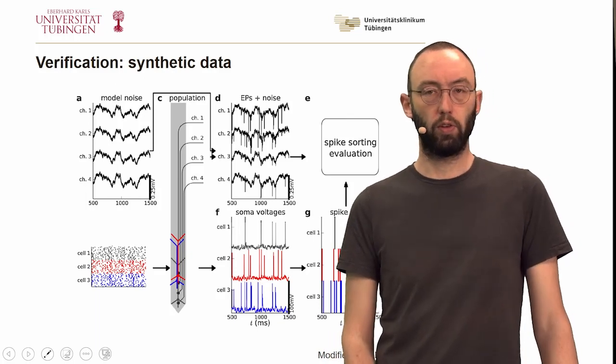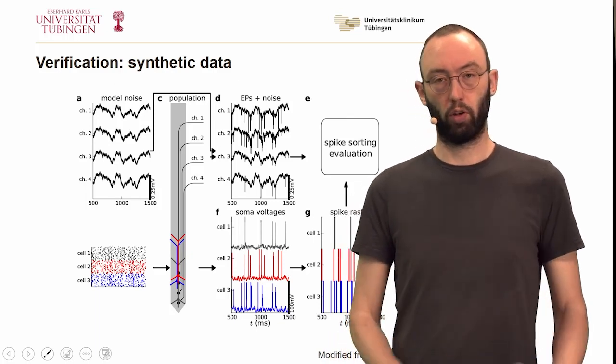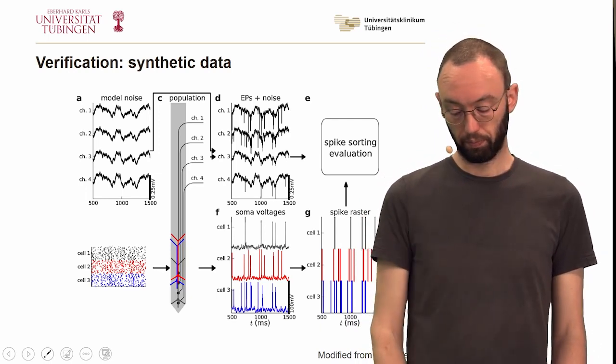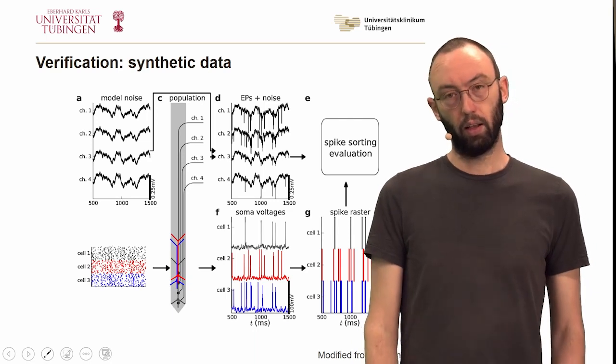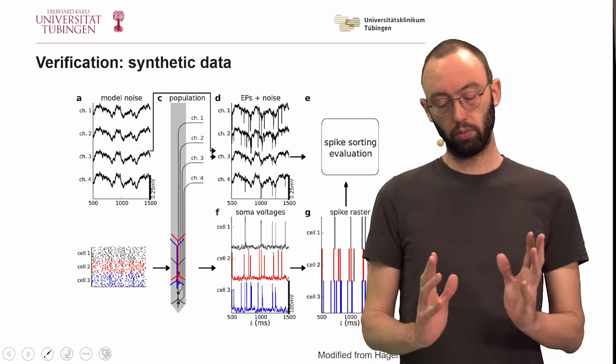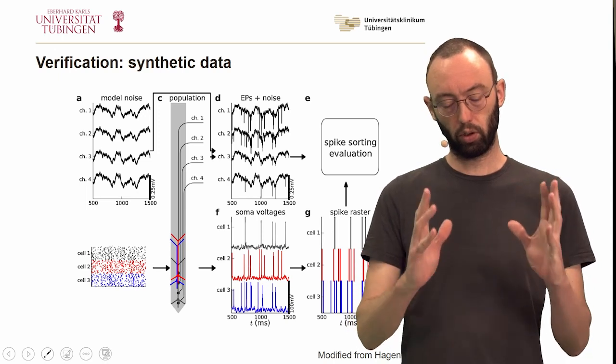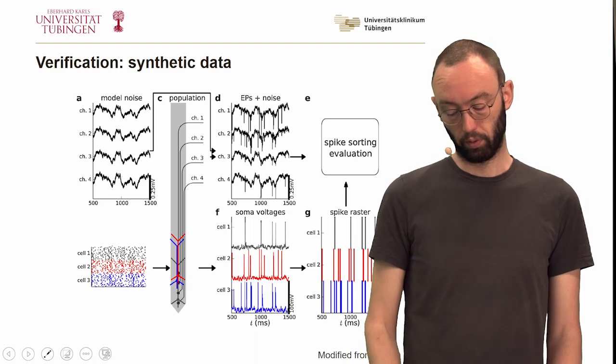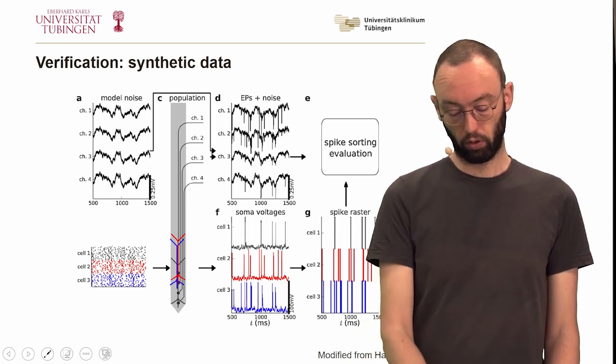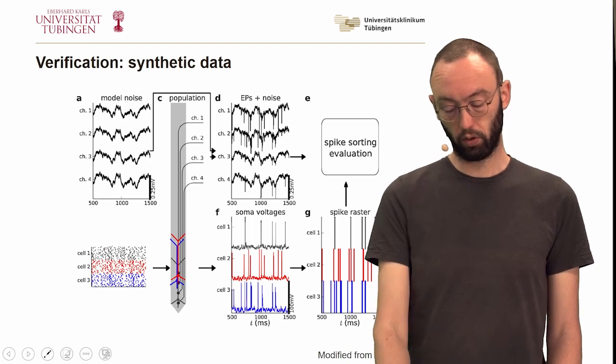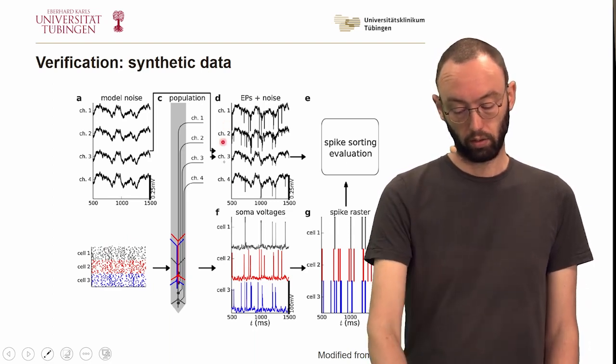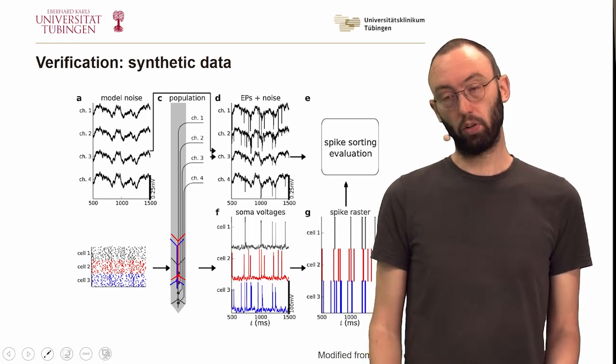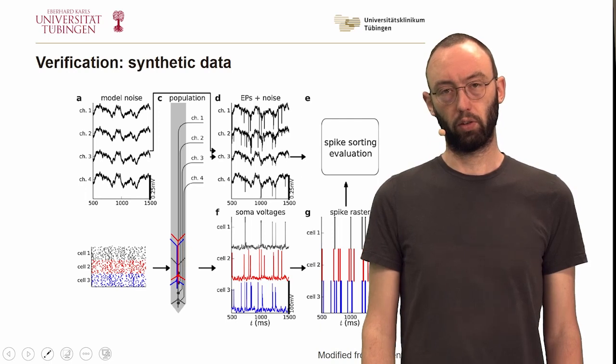An alternative would be to use synthetic data from simulations of tissue. In this case, the group by Hagen et al., they simulated a cortical column with many neurons in a computer simulation. They added noise, they added all the simulations - the spike simulations, the soma voltage simulations, the extracellular potential, and so on, and it added all of that together and used that for evaluating spike sorting algorithms.